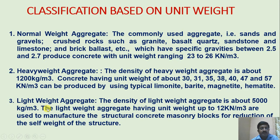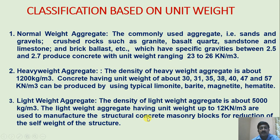Light weight aggregate. The density of light weight aggregate is about 500 kg per meter cube. Light weight aggregates having unit weight of 12 kN per meter cube are used to manufacture structural concrete and masonry blocks for reduction of self weight of structure.